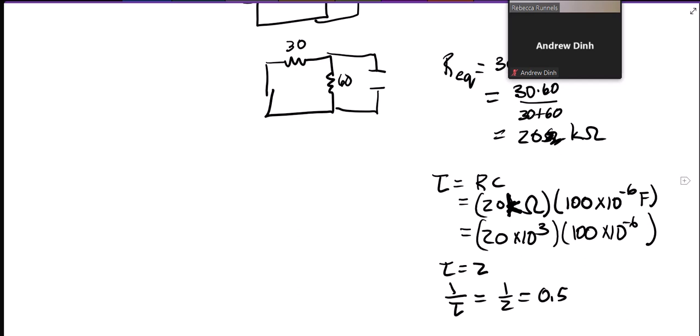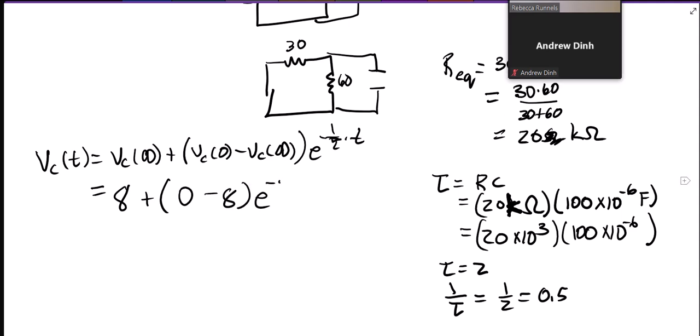So now I have everything I need to find VC of t. So VC of t is VC at infinity plus VC at 0 minus VC at infinity times e to the minus 1 over tau times t. So VC at infinity was 8. VC at 0 was 0 minus 8 e to the minus 0.5 t. Or 8 minus 8 e to the minus 0.5 t.